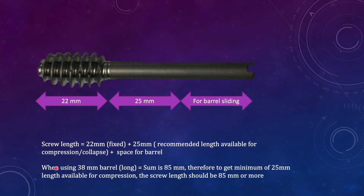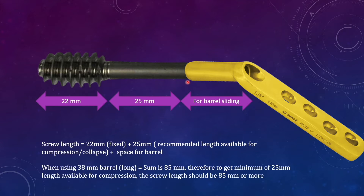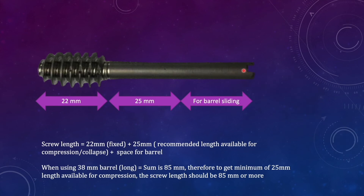When using a long barrel, the size of the barrel is 38 millimeter. If we add the 38 millimeter to the 22mm threaded part and 25mm compression space, the sum comes out to be 85 millimeter. Therefore, for getting a minimum of 25 millimeter compression, we want the lag screw to have an additional 38 millimeter space for the barrel, which is why we use the long barrel whenever the screw size is 85 millimeter or more.